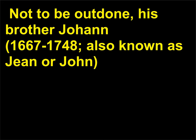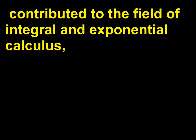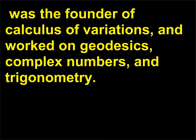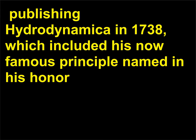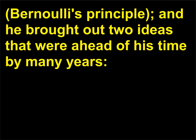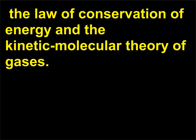Not to be outdone, his brother Johan (1667–1748), also known as Jean or John, contributed to the field of integral and exponential calculus. He was the founder of calculus of variations and worked on geodesics, complex numbers, and trigonometry. His son, Daniel Bernoulli (1700–1782), was considered the first mathematical physicist. Publishing Hydrodynamica in 1738, which included his now-famous principle named in his honor, Bernoulli's principle, he brought out two ideas ahead of his time: the law of conservation of energy and the kinetic molecular theory of gases.